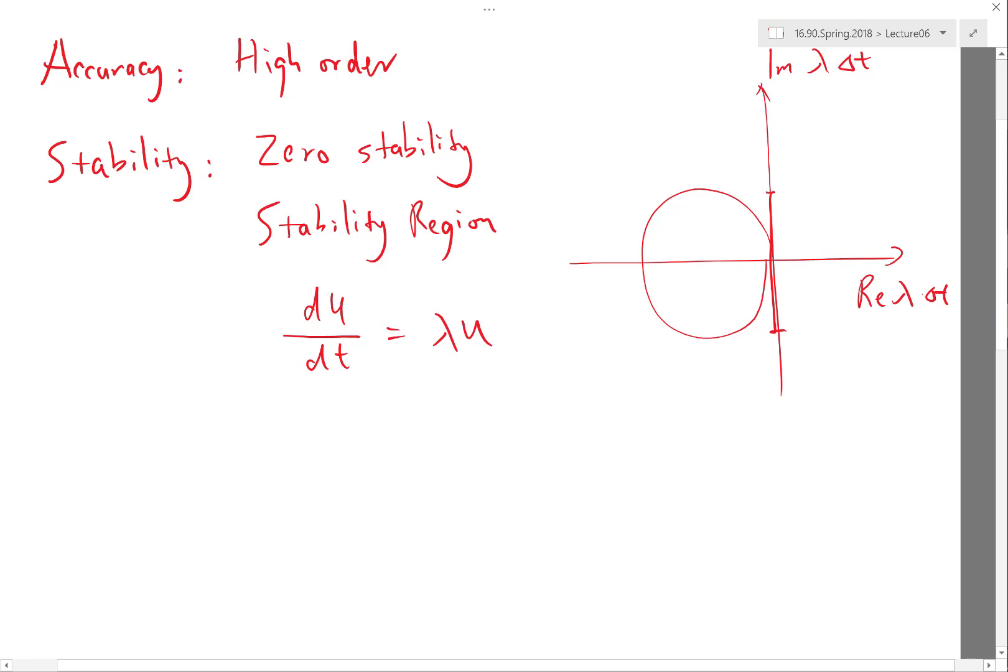There are some schemes where the most stable version is actually when you have a delta t that is very very large. What kind of scheme is that? It's the kind of scheme we started discussing last lecture: implicit schemes.